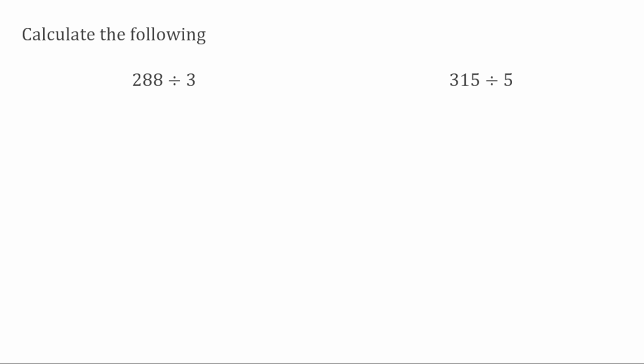For this first example we've got 288 divided by 3, so I'm going to set up my lines like this. I've got 288 and then 3 on the outside.